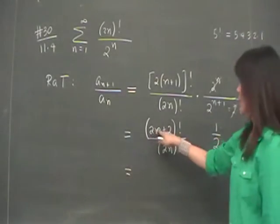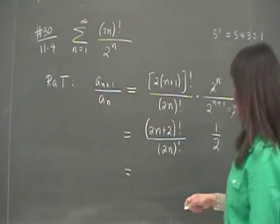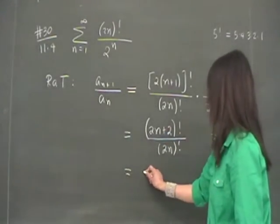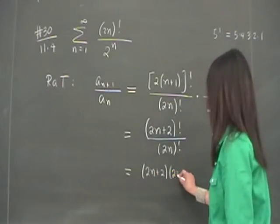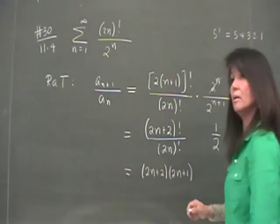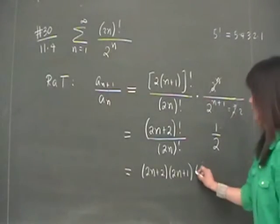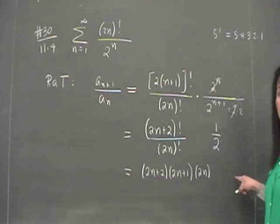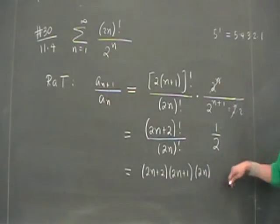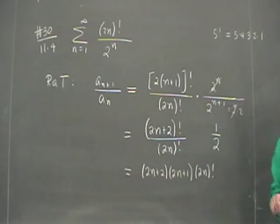So let's look at this. You have the quantity 2n plus 2 factorial, so what does that mean? You start with 2n plus 2, then you have 2n plus 1, then you'll have 2n, 2n minus 1, 2n minus 2. But what are those guys after? It's just 2n factorial.